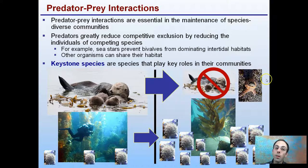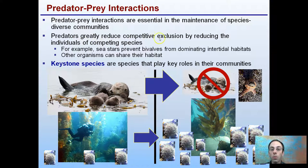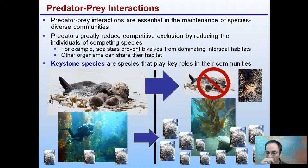This predator-prey interaction gives rise to something called keystone species. These interactions are essential for the maintenance of species diversity in communities. Predators can greatly reduce competitive exclusion by reducing the numbers of competing species.